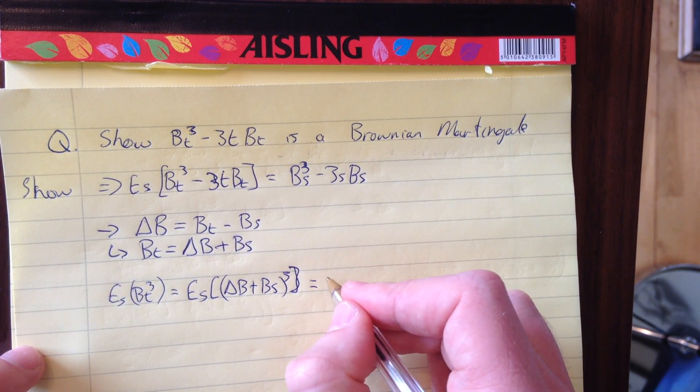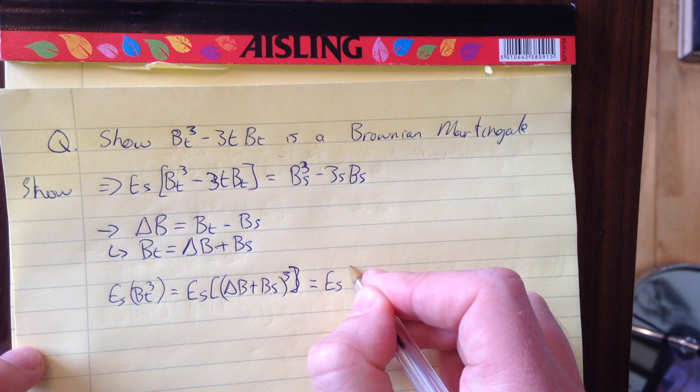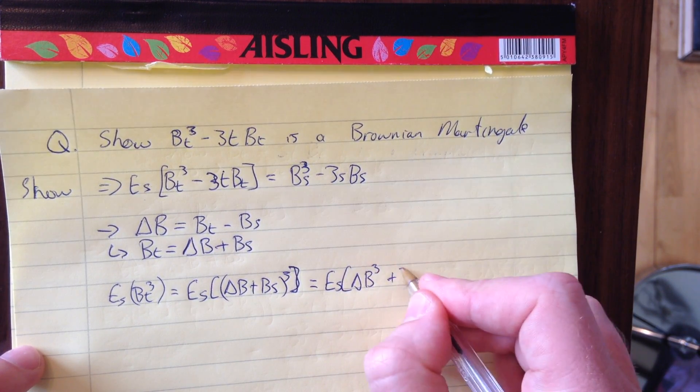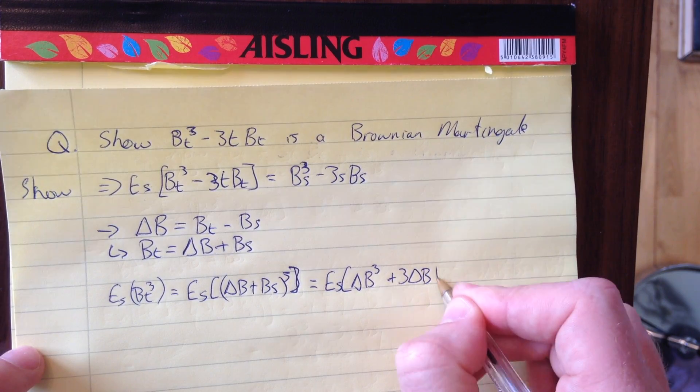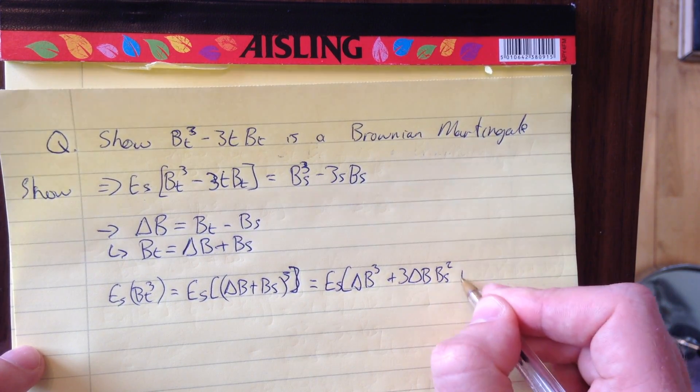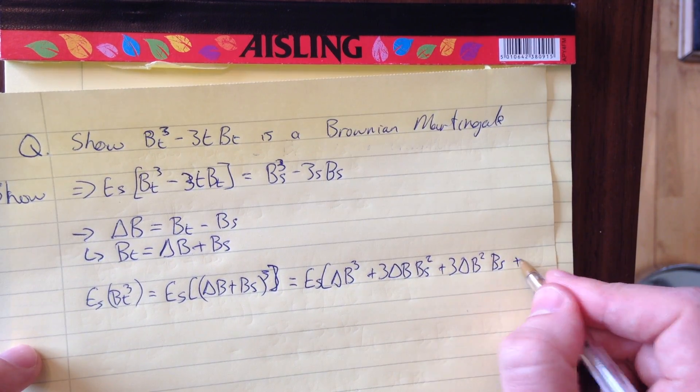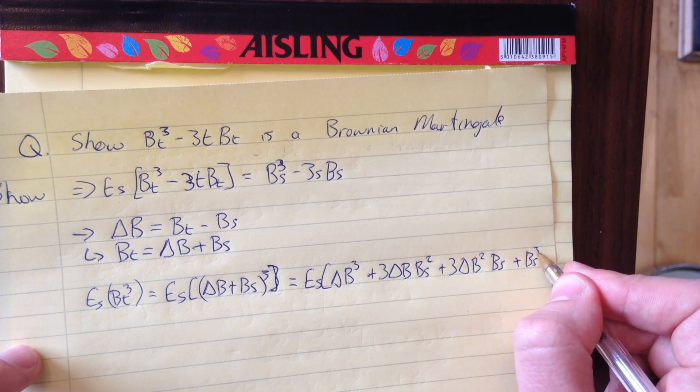This equals the expected value of delta B^3 + 3(delta B)(B_s)^2 + 3(delta B)^2(B_s) + B_s^3.